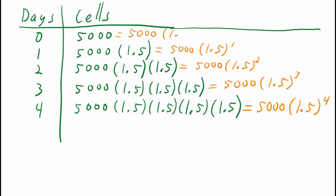Hmm. Well, anything to the zero power equals 1. So this is really 5,000 times 1, which equals 5,000. So it works.